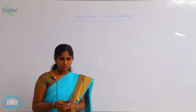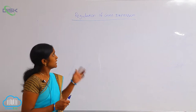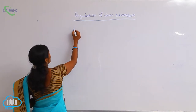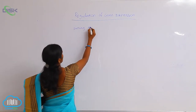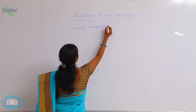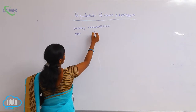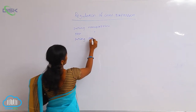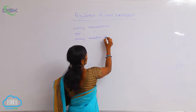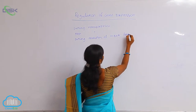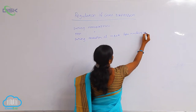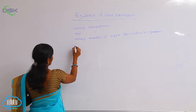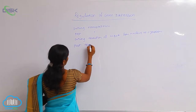Regulation of gene expression. A gene can be expressed as phenotypic expression. Gene expression is regulated at different stages: during transcription, post-transcription, during the transfer of mRNA from nucleus to cytoplasm, and at post-translation.